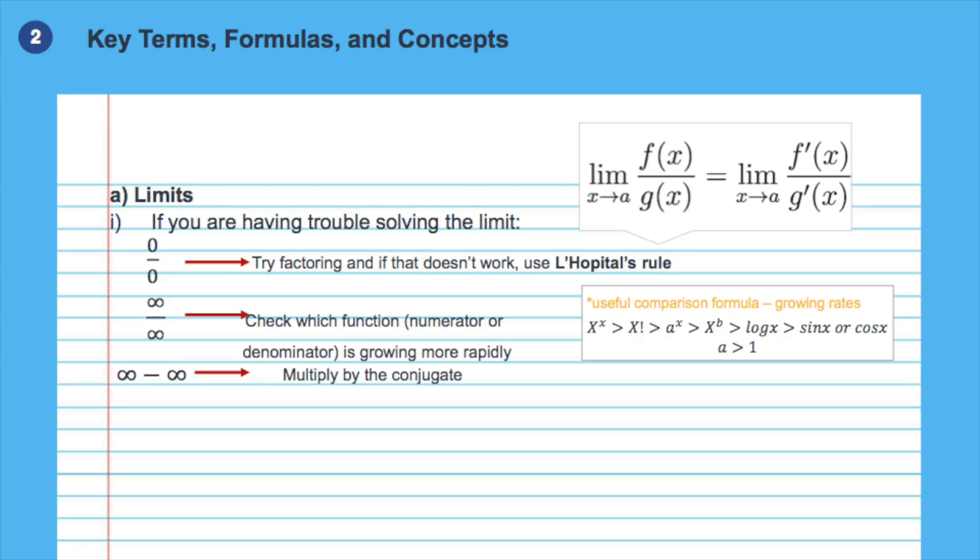Remember, conjugates are generally used to get rid of square root and are generated by changing the sign between the two terms in the function. For example, for a plus 3, the conjugate would be a minus 3. And when we multiply a function by its conjugate, we always get the square of the first term minus the square of the second term.